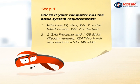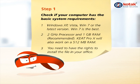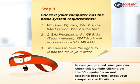A processor which is at least 2 GHz. The Keet Pro X will work on 512 MB RAM, but it is recommended to have 1 GB RAM, as the higher the RAM the faster it will process. If you want to install this in your office, you need to have the rights to install the file on your office computer. In case you're not sure of your system configuration, you can check this by right clicking on the computer icon and selecting properties.